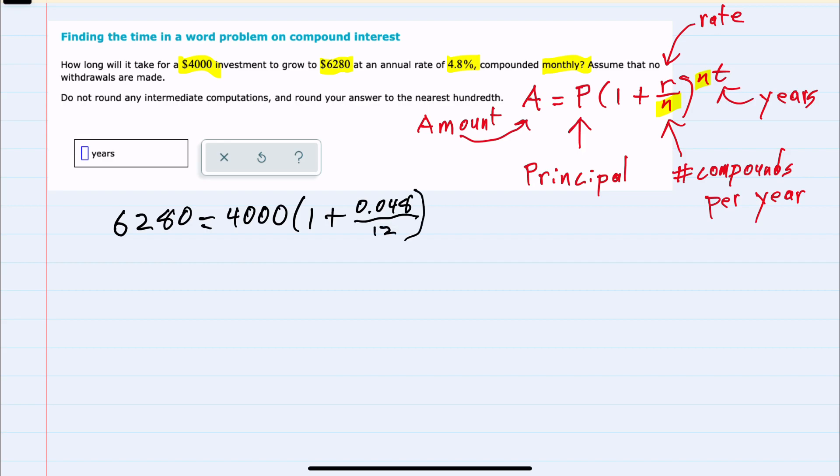our N will be 12. Raise this to N, which is 12, times the number of years, and that's our value that we're trying to solve for.